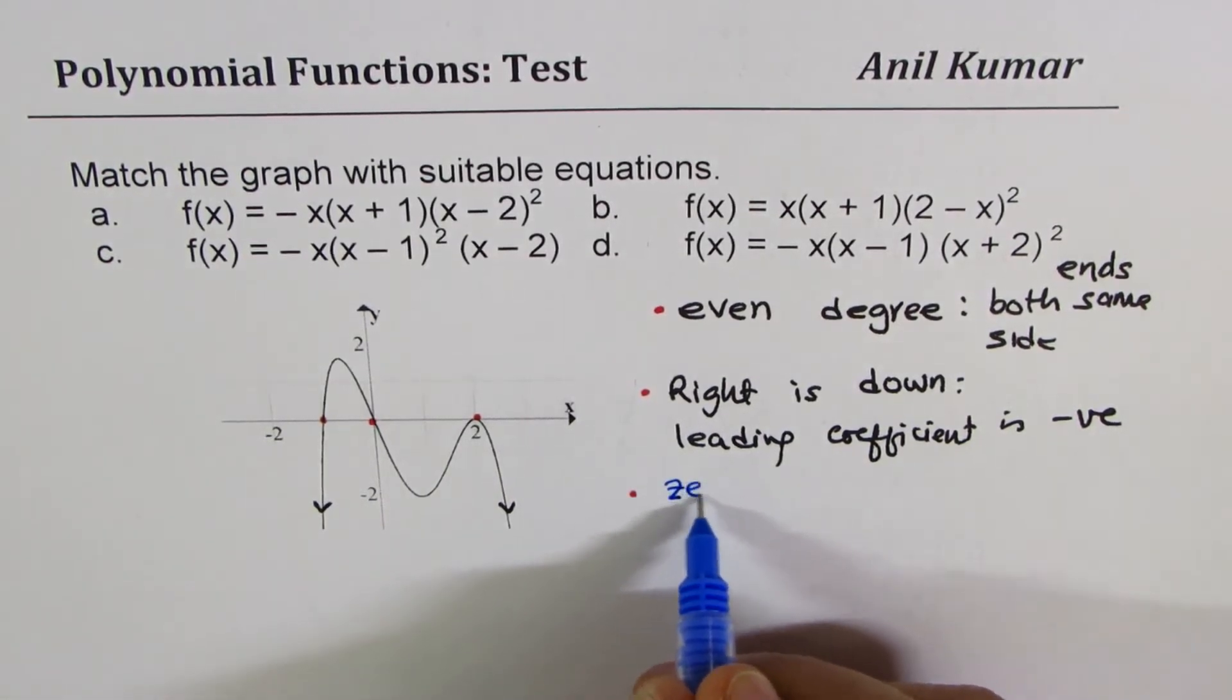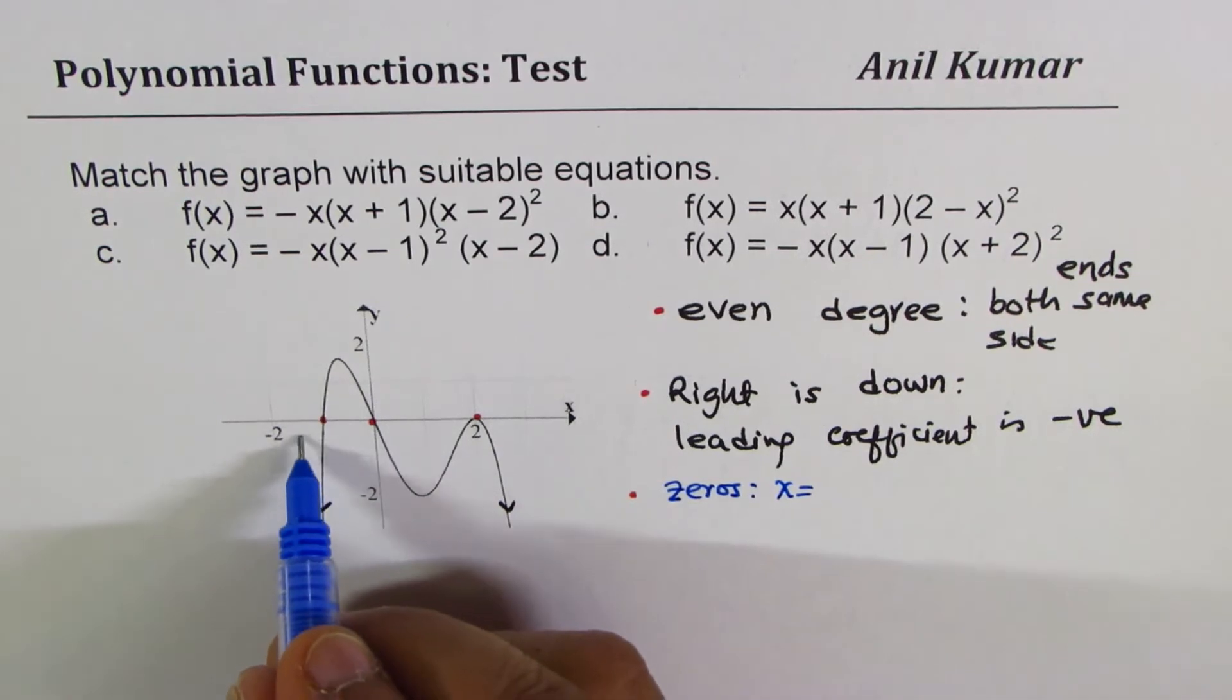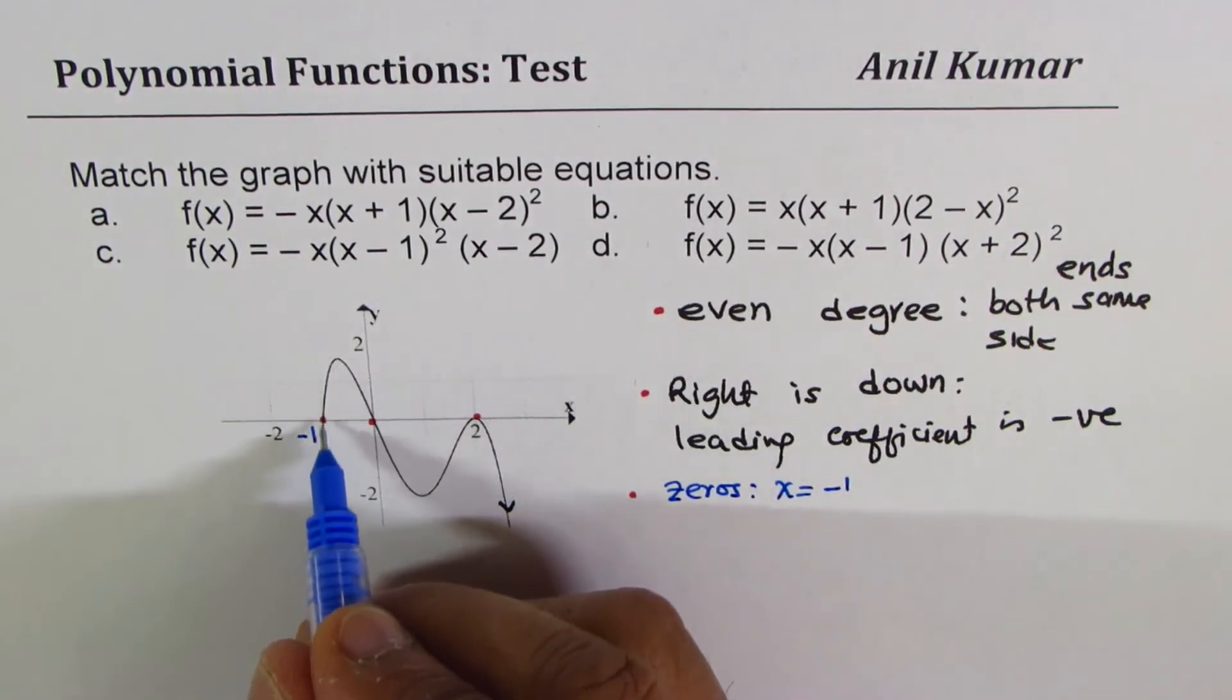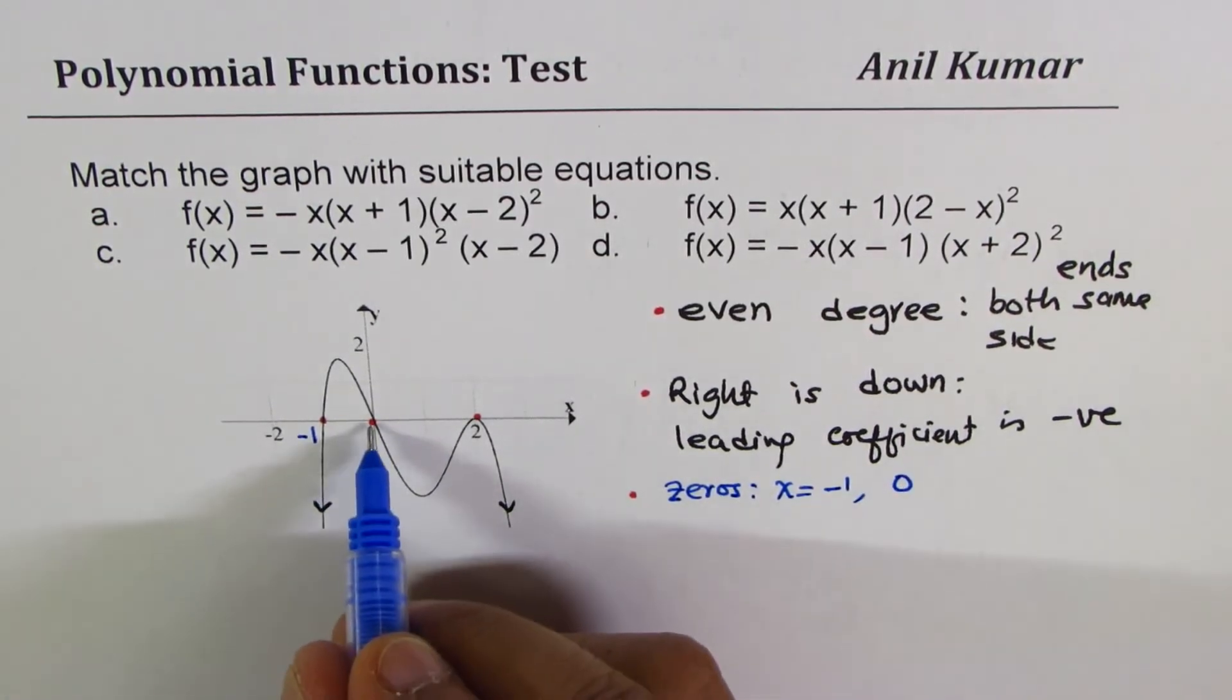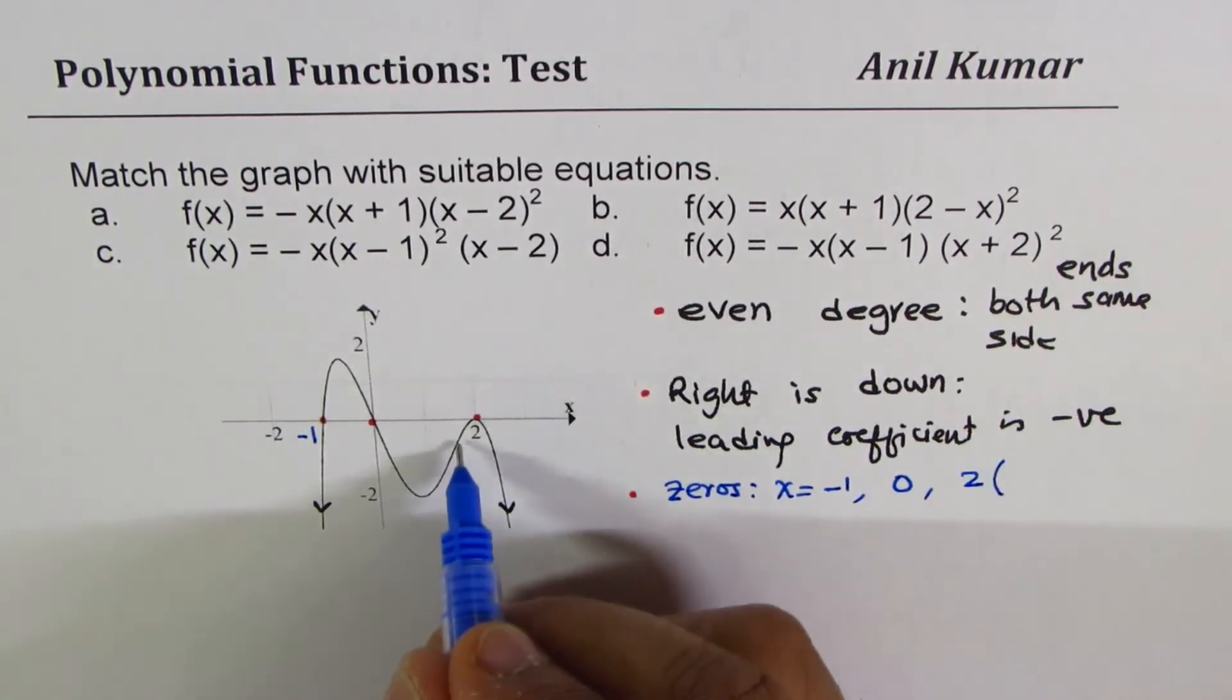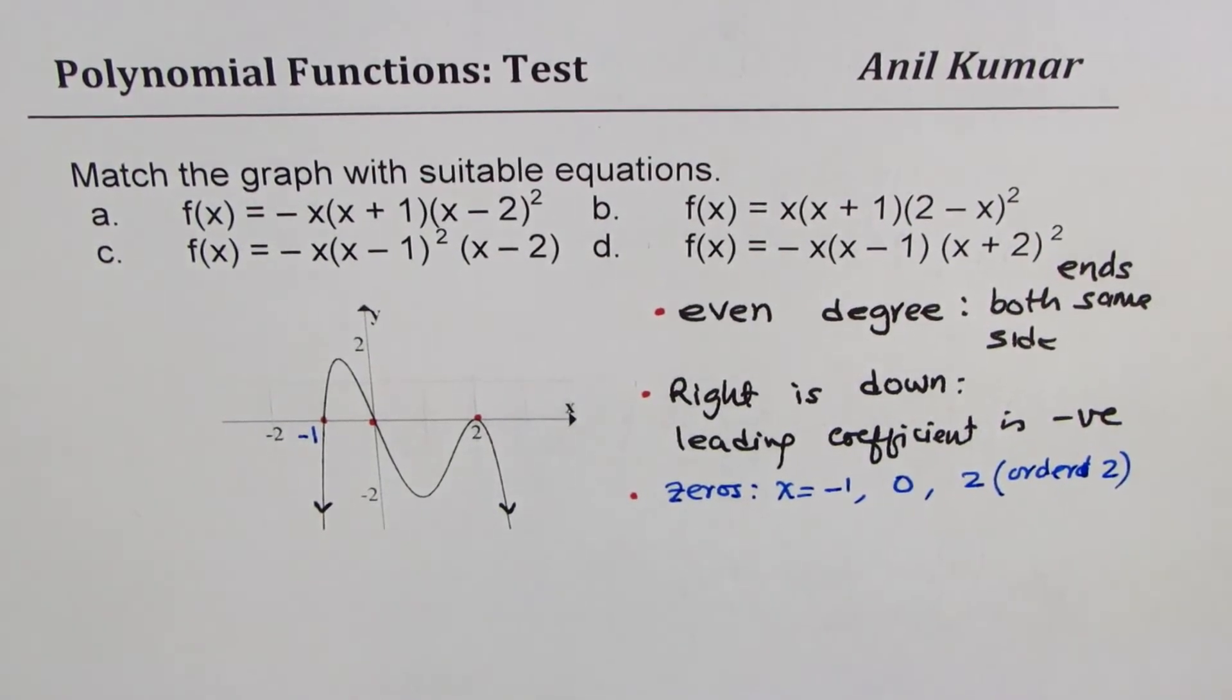So we have zero at x equals minus one, and since it goes straight, it is order one. And then we have at x equals zero, which is also of order one. However, at x equals two, it turns. So it is order two.